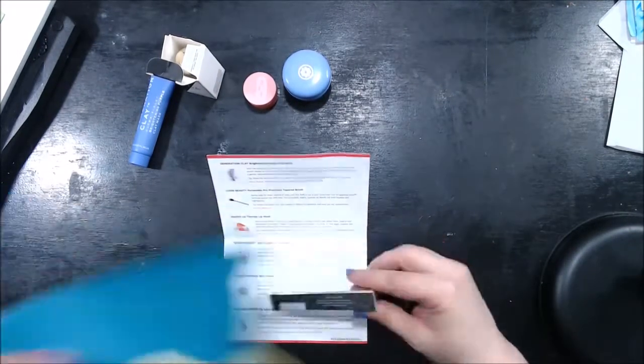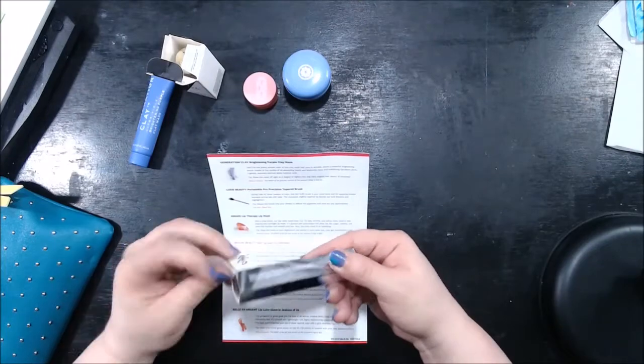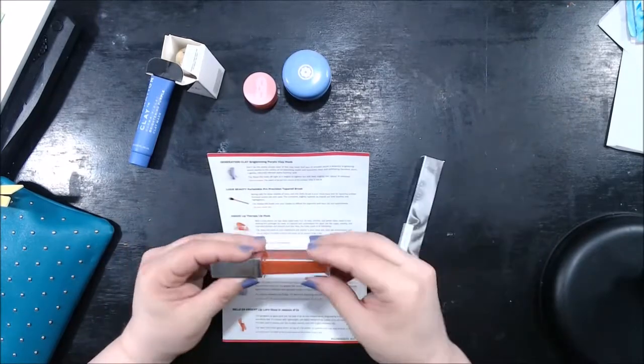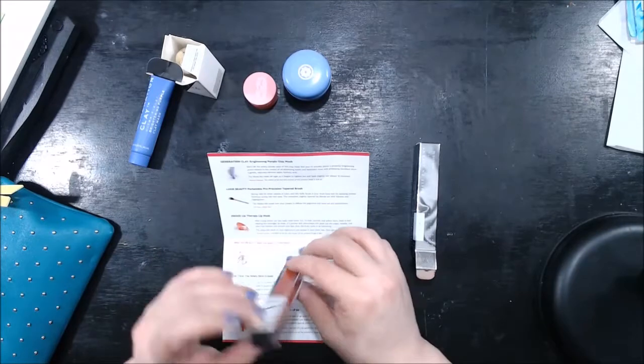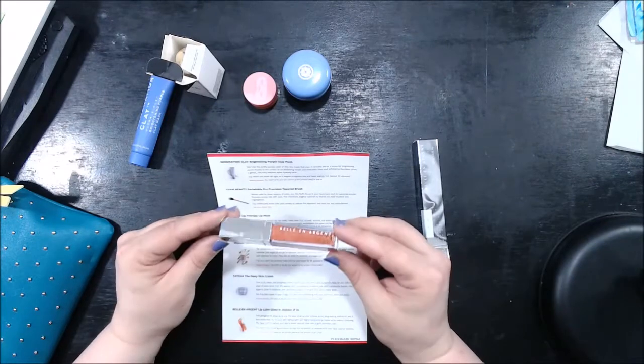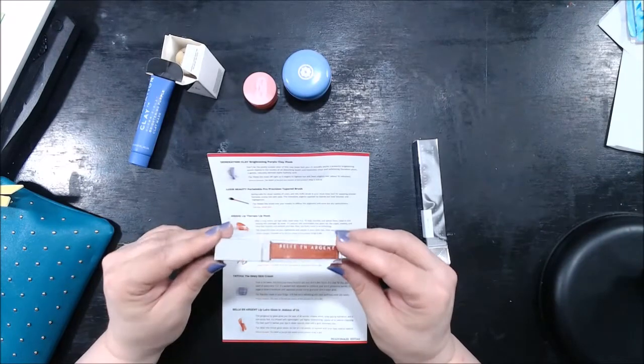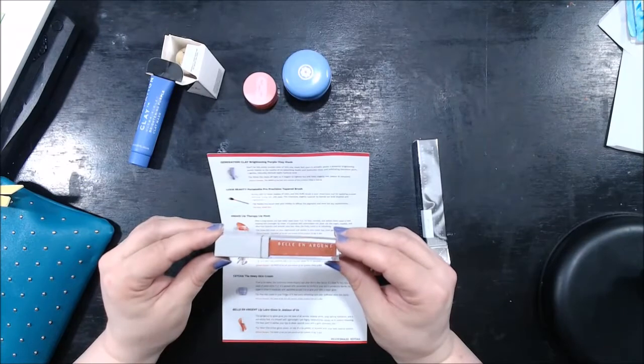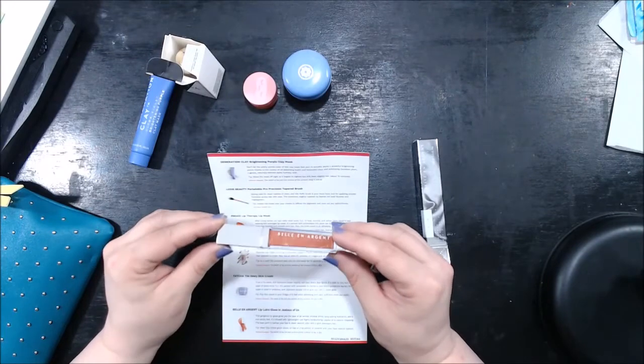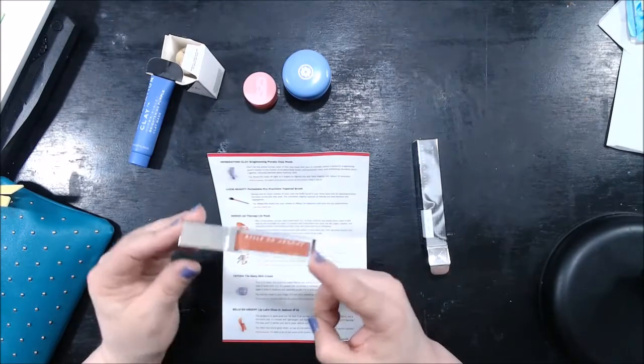Last but not least, besides our bag, this is a gloss. Bell and Argent Lip Lawyer Gloss in Jealous of Us. This gorgeous lip gloss gives you the best of all worlds: intense shine, long-lasting hydration and non-sticky feel. It's infused with lightweight yet highly moisturizing jojoba oil to reduce chapping. The best part, it bathes your lips in sheer neutral color with a gold shimmer tint. This is also a deluxe size. The full size of this product would normally be $22. That's not bad.